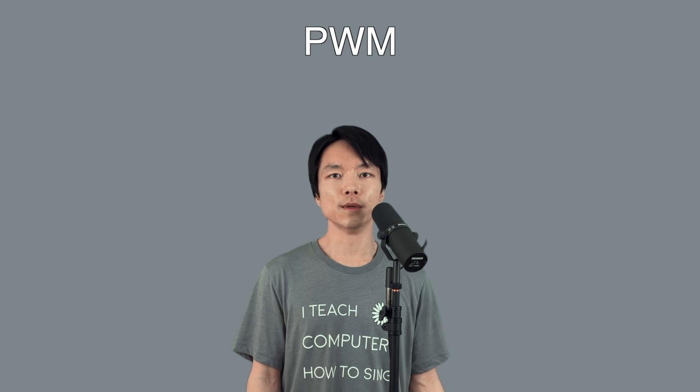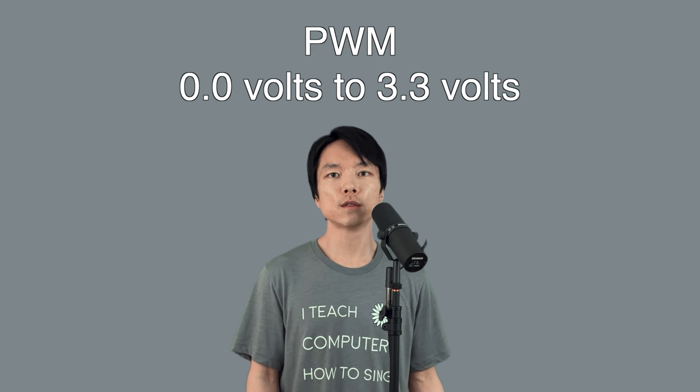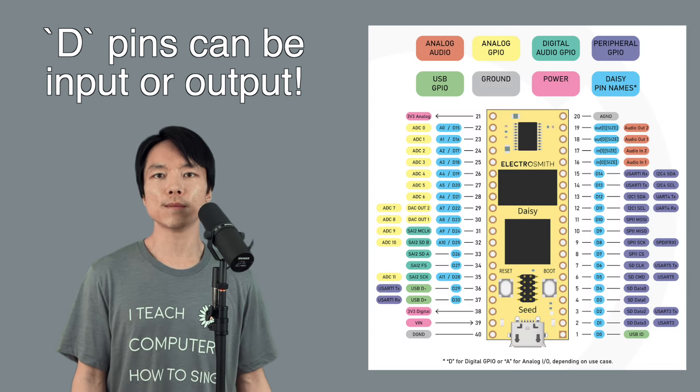One way is to use PWM, which allows us to output varying voltages between 0.0V to 3.3V. Any of the daisy's pins that have the letter D can be used for input or output. In this case, a PWM signal output.